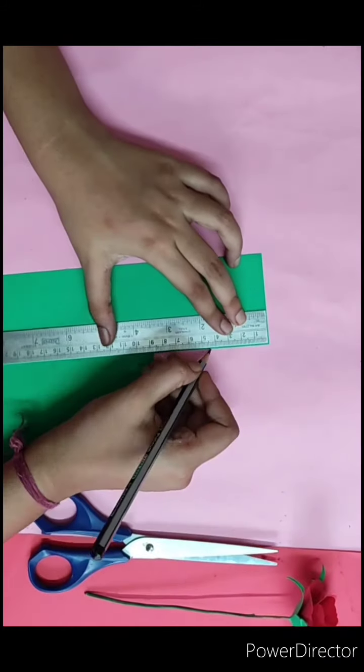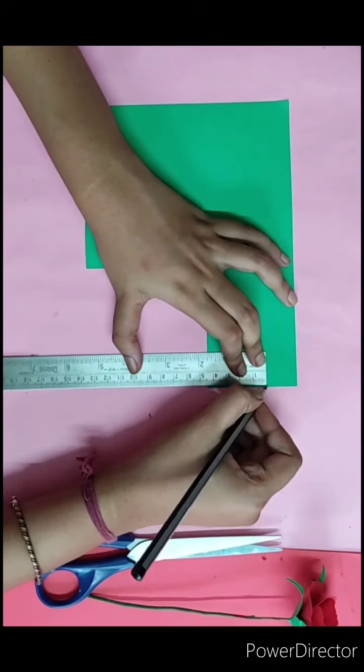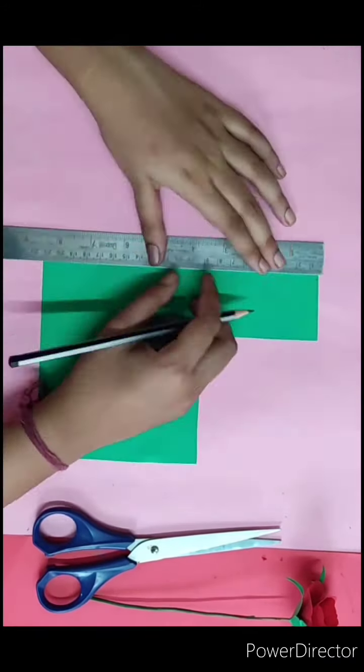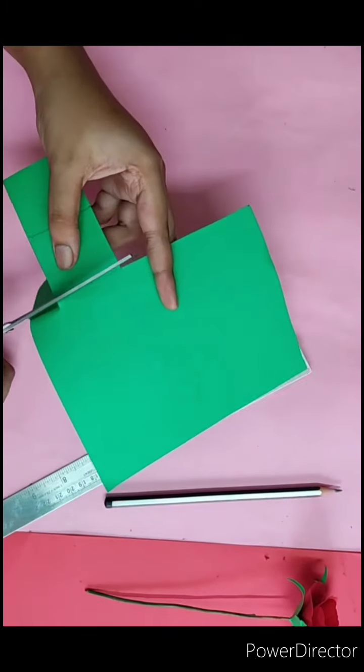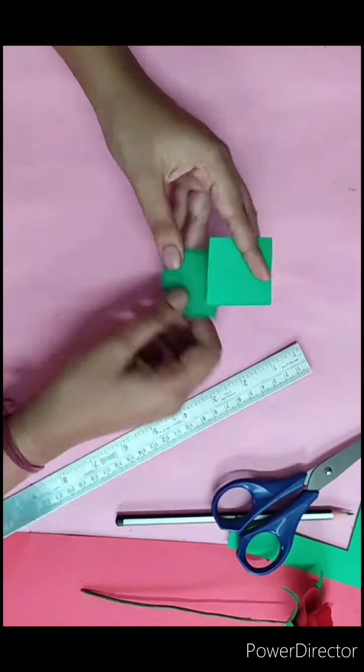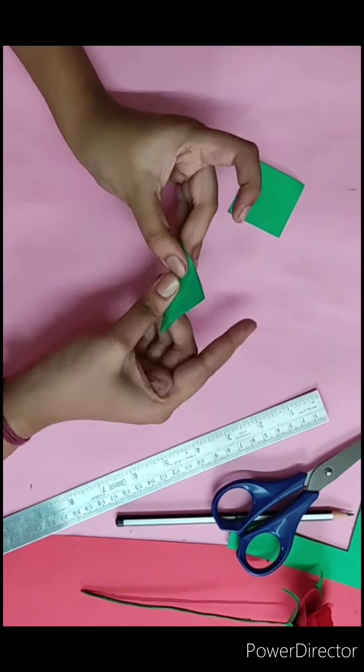Now cut two squares, dimension 4.5 centimeter by 4.5 centimeter, to make the leaves. Fold the paper and draw the pattern of a leaf.